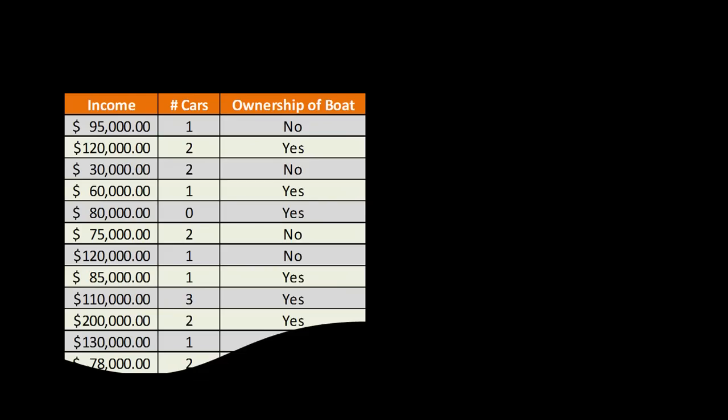Let's take a concrete example. We've got information about people's incomes and the number of cars they own, and also whether or not they own a boat. We're trying to predict whether new people — whose incomes and number of cars we know — are likely candidates to buy a boat. We'll apply the usual data mining techniques: use training data to build a model, validate the model, and then test it.